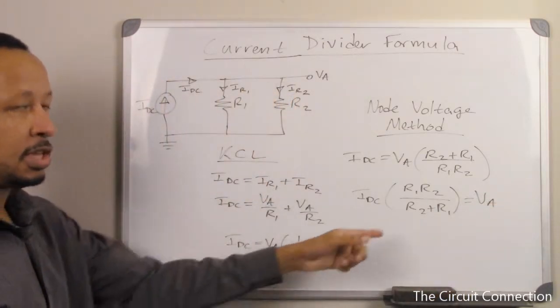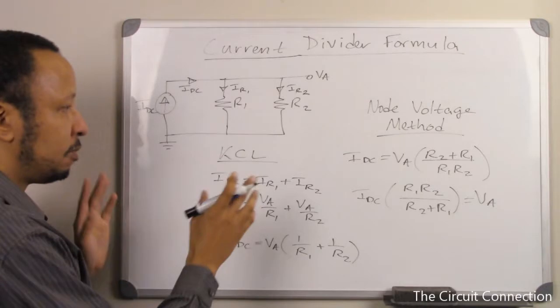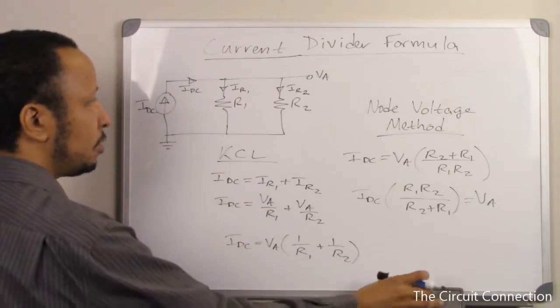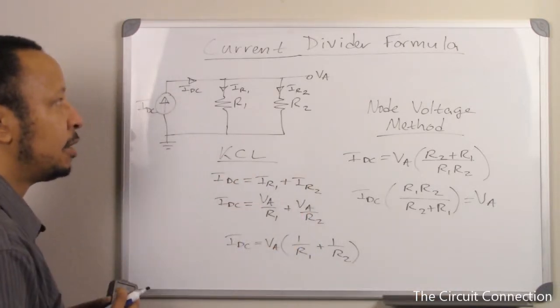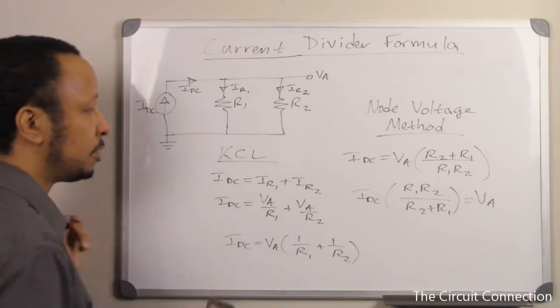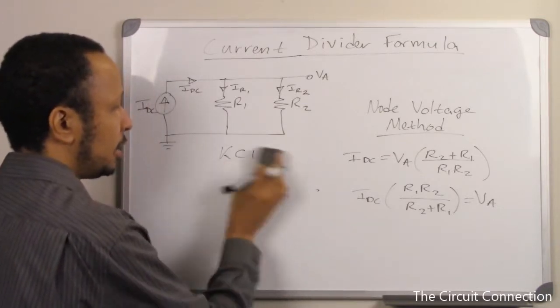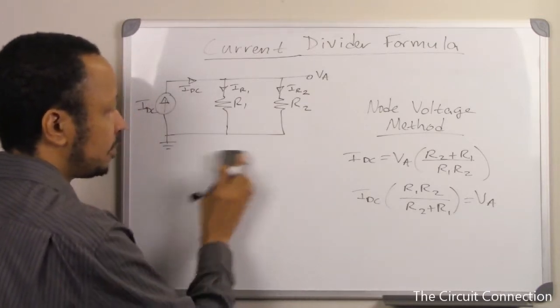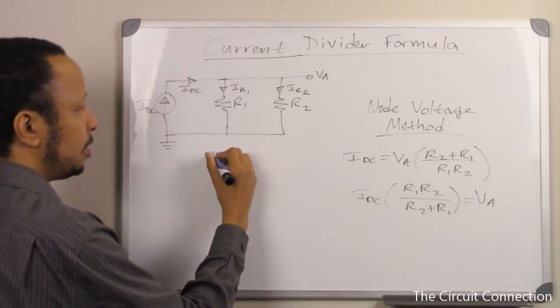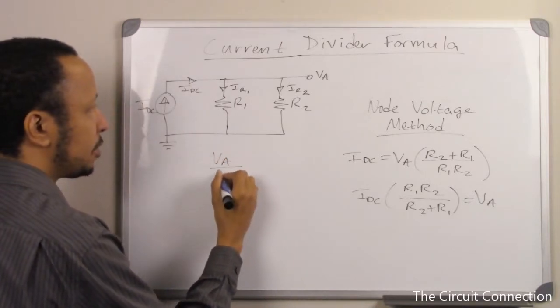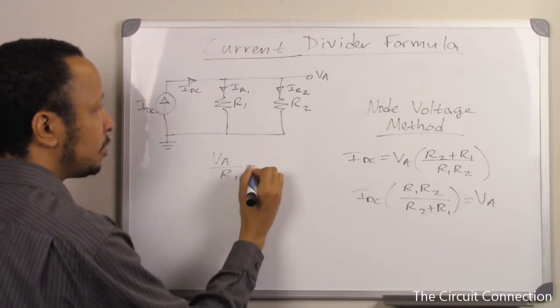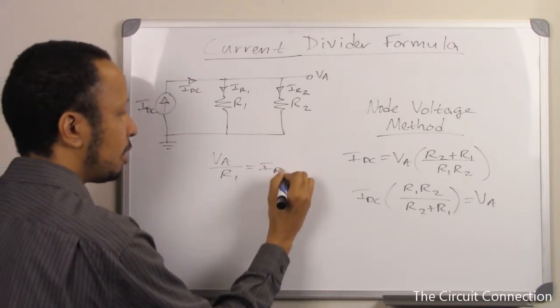We're going to keep using this expression here for either IR1 or IR2. What we'll do is take notice of the fact that VA over R1 is going to equal IR1.